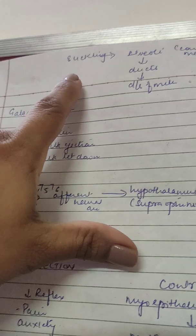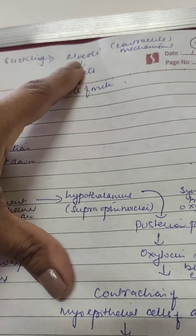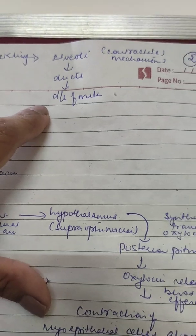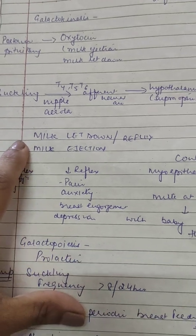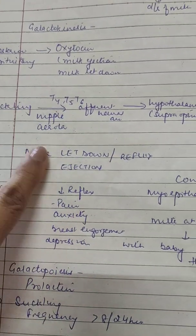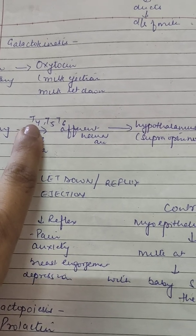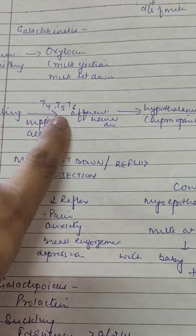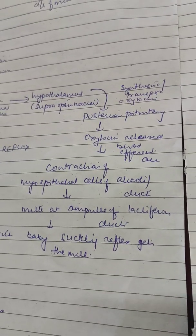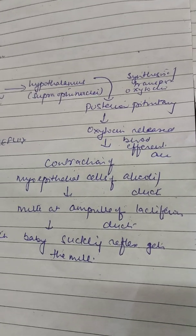This is the reflex arc: there is suckling, the suckling reflex goes to the alveoli where the milk is produced, there is a contractile mechanism of the alveoli and milk is released into the lactiferous ducts and discharged from the nipple. When the child sucks the nipple and areolar region — the pigmented zone near the nipple — the reflexes are carried by neurons at the level of T4, T5 and T6 afferent nerves to the supraoptic nuclei of the hypothalamus, which sends messages to the posterior pituitary.